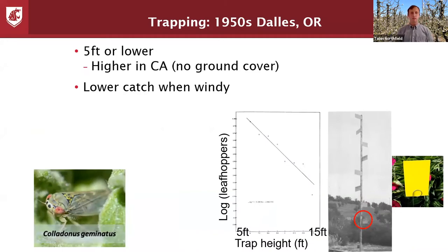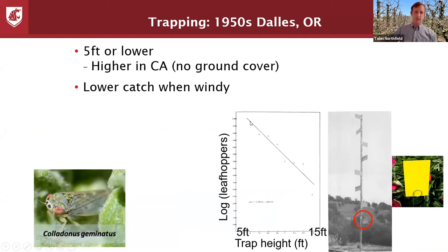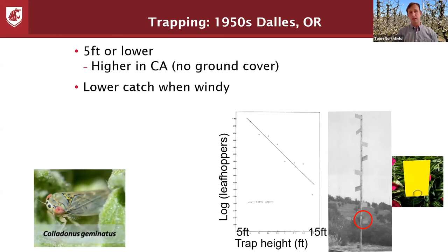This is a study from the 1950s where researchers put yellow sticky cards all the way up posts from five to fifteen feet. Catch dropped off dramatically from five to fifteen feet — and this is on a log scale, so it's really dropping very rapidly. They also found that catch was much lower on windy days. On days when it was really windy, catches dropped; when it was calm, leafhoppers were more likely to fly. This work was done on Cholodonus geminatus, one of the two more abundant vectors here.